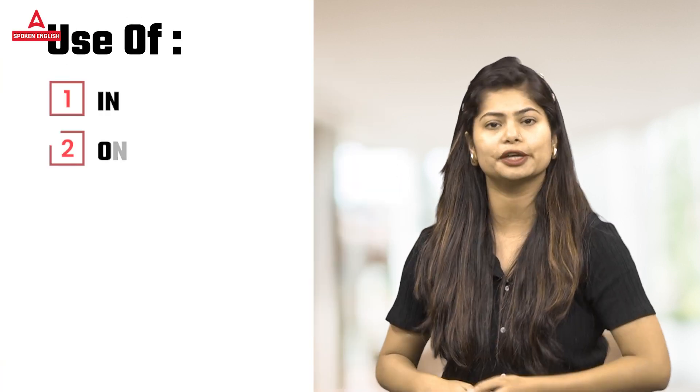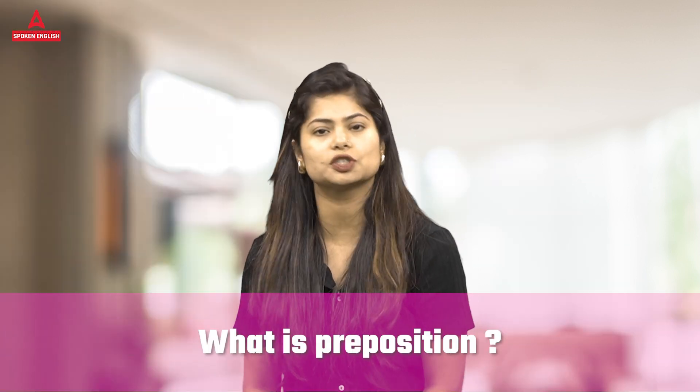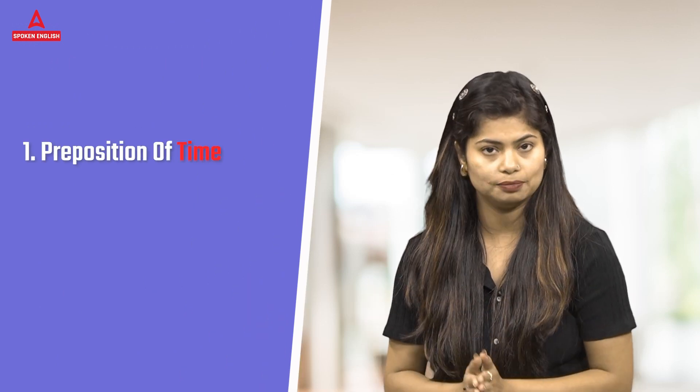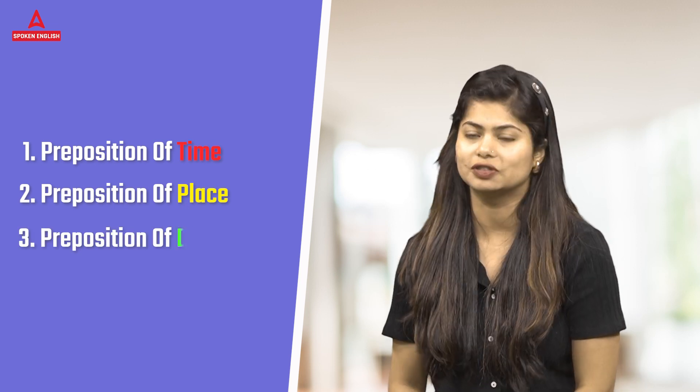Let's try to understand how to use in, on, and at. First of all, what is a preposition? A preposition is a word that explains the relationship between one noun and another in a sentence. The preposition tells you two or three things: one is preposition of time, another is preposition of place, and another is preposition of direction.